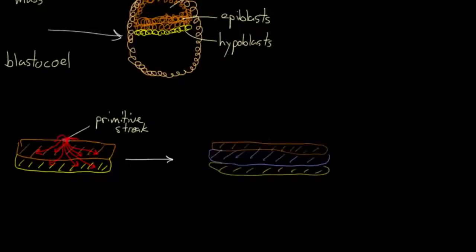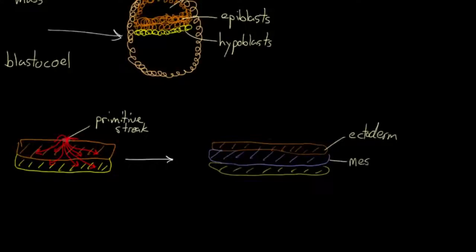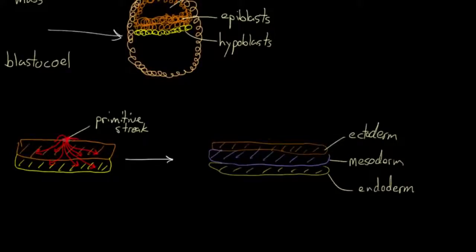So now instead of the bilaminar disc, we actually have a trilaminar disc — three layers, and these are called our germ layers. We have a single layer on top, which instead of epiblasts is now known as ectoderm. Our middle layer is mesoderm, and our lower layer is endoderm. Cells from these three layers go off to do very important things, with each layer forming its own specific structures. That process of forming the three layers is called gastrulation.